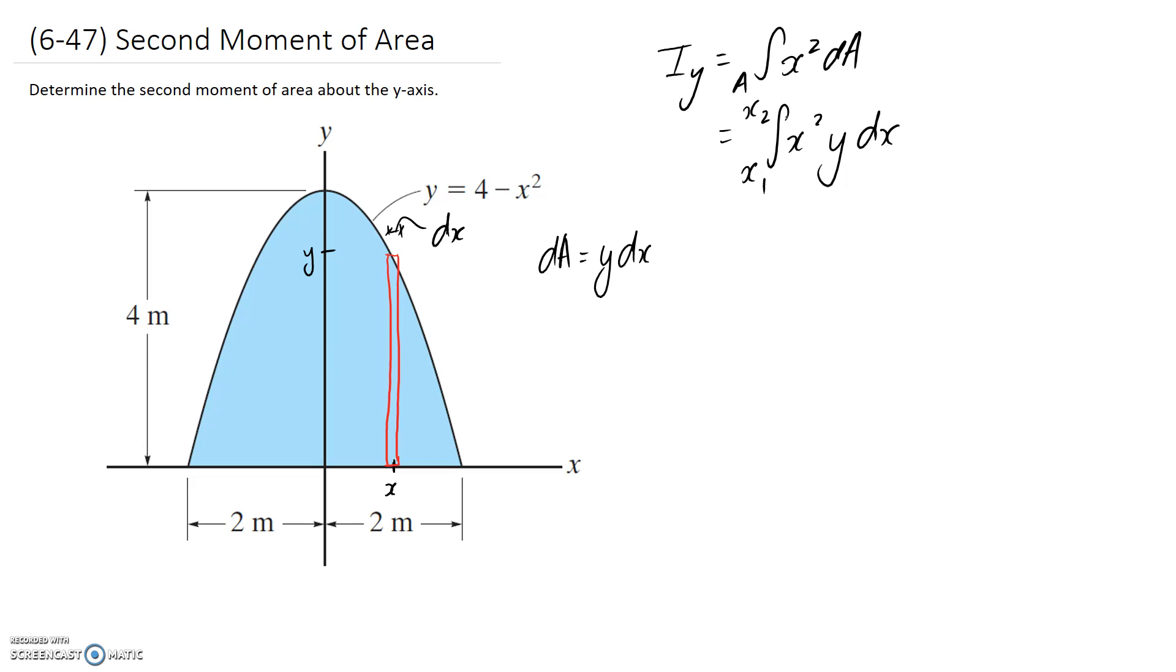If I'm going to be able to integrate this, I need to make sure everything in the equation is in terms of x. And unfortunately, at the moment, we have a y in the equation, and we need to change it into some function of x. But we can do that based on the fact that we know the equation of this line here is 4 minus x squared. Let's go ahead and put this in over here.